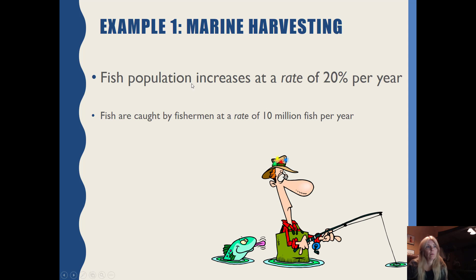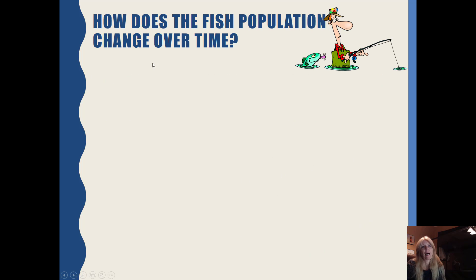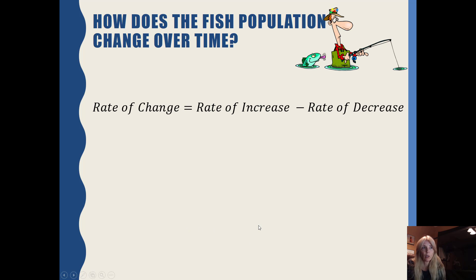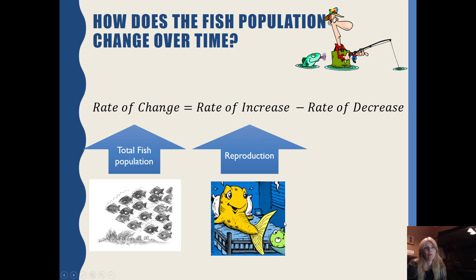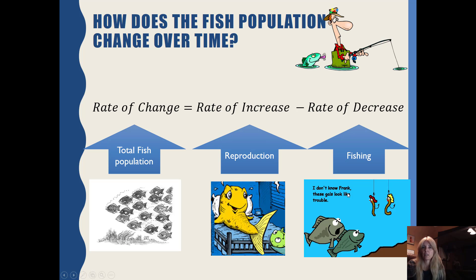For example, a fish population increases at a rate of 20% per year, and fish are caught by fishermen at a rate of 10 million fish per year. So how does the fish population change over time? The key thing to remember is that your rate of change equals your rate of increase minus your rate of decrease — rate in minus rate out — which accounts for the total fish population, reproduction, and the rate going out.